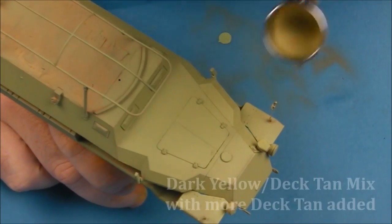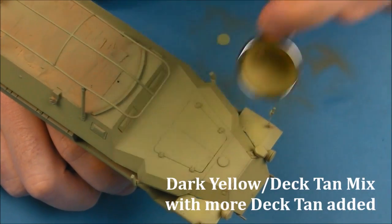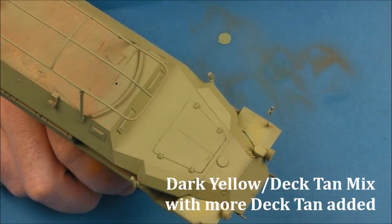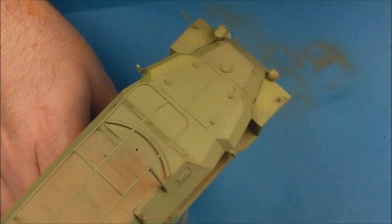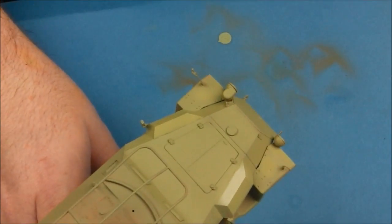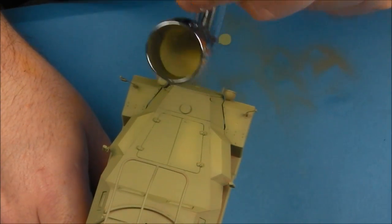With the base coat of our dark yellow allowed to dry, we're going to add a little bit more deck tan to our mixture just to make a slightly lighter color and we're going to do some basic highlighting. I'm just going to focus this color into the center of panels.